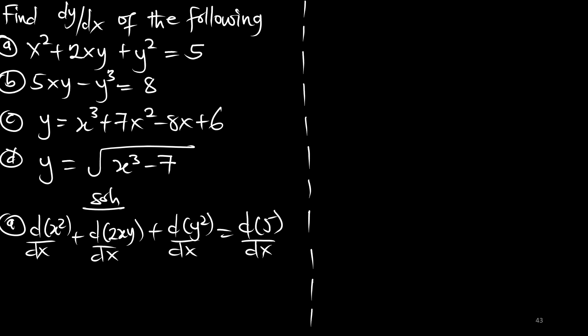Differentiating x squared gives us 2x. Now when we check the derivative of 2xy, it involves two functions x and y, which makes it a product, so we use the product rule to expand this form.